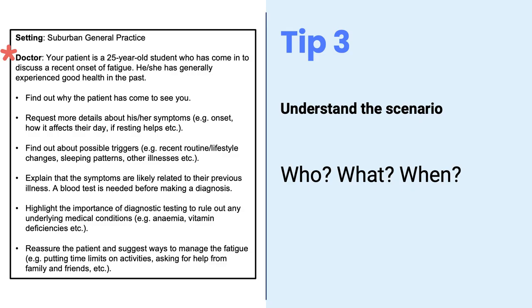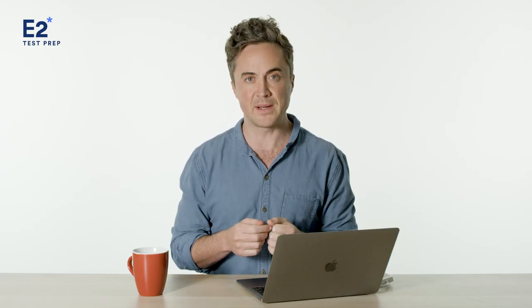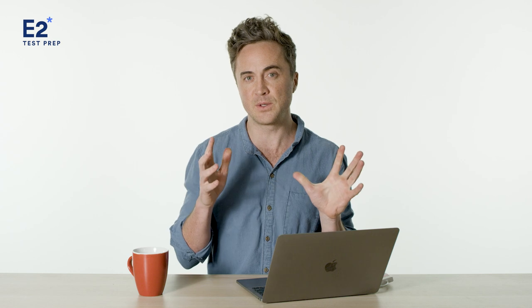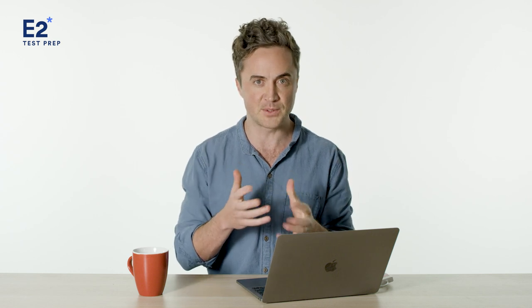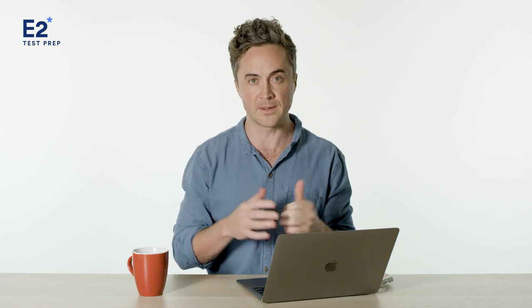Tip three is to understand the scenario. This one says: your patient is a 25-year-old student who has come in to discuss a recent onset of fatigue; he or she has generally experienced good health in the past. So the scenario tells you the background of the patient — it's going to tell you who, what, and possibly when something is happening, and in particular it's going to talk to you about the main medical issue of that particular patient. This is important just to get an idea of what's going on.